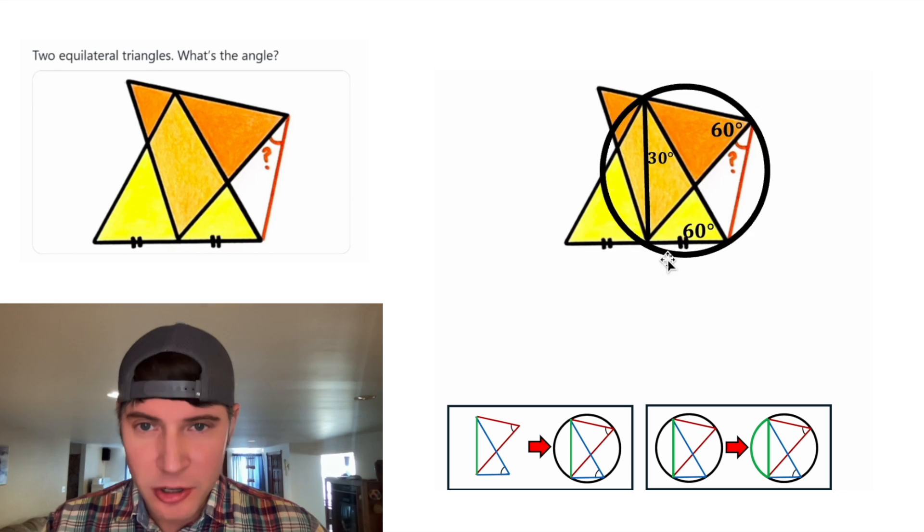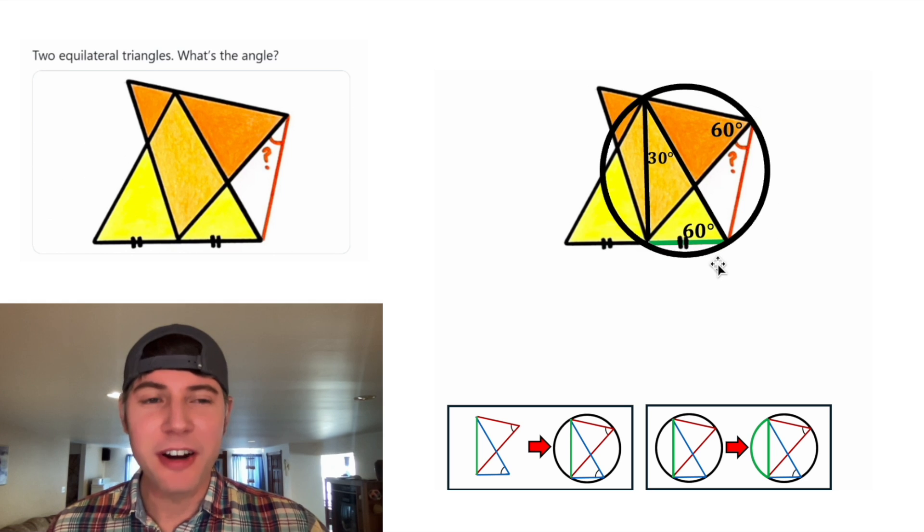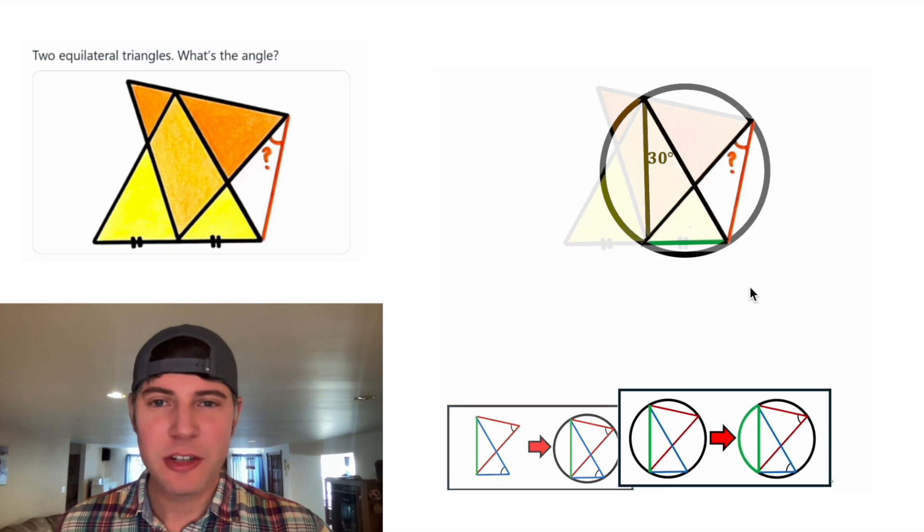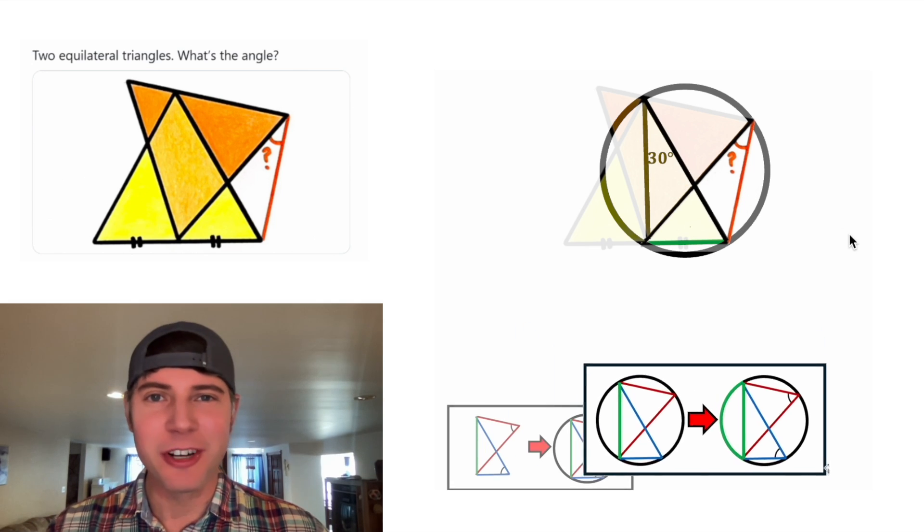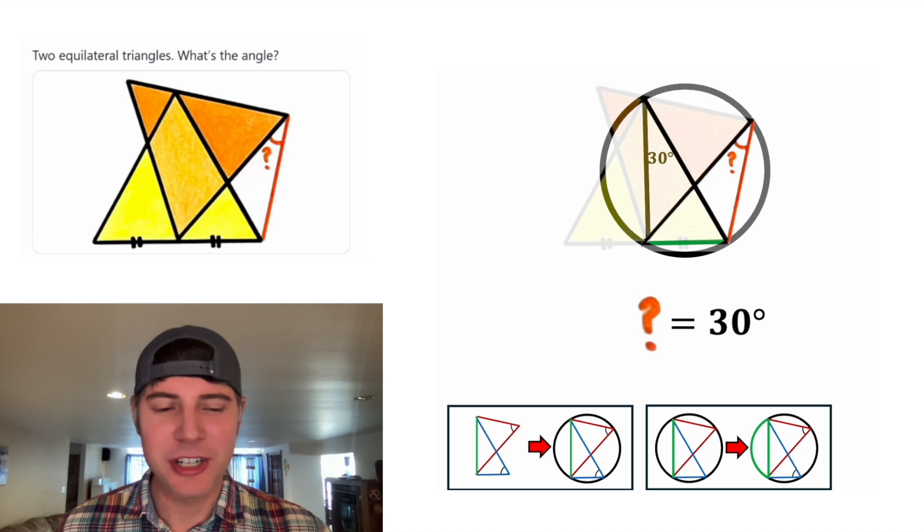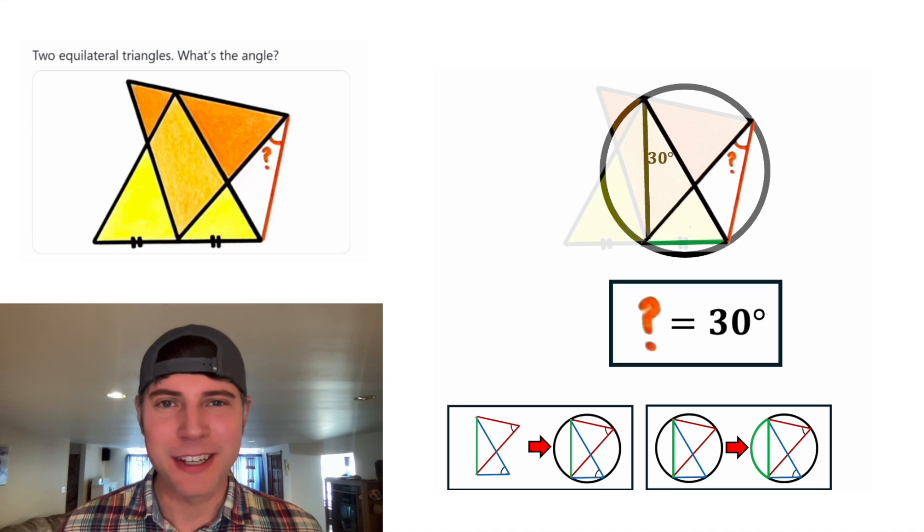Now let's bring back our original figure. Note this chord of the circle right here, let me color it green. This is a very important chord. Both of these angles subtend this chord, so using this theorem we know that these two angles are congruent. And that means that the question mark is equal to 30 degrees. That is the answer to our question. Let's put a box around it. How exciting!